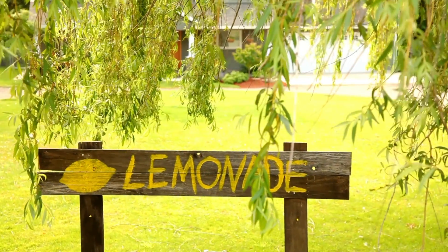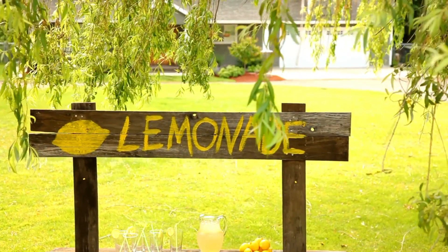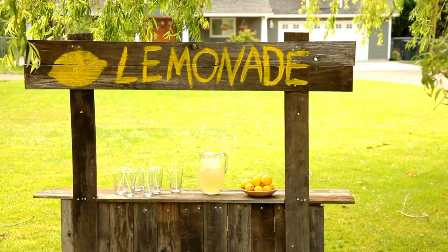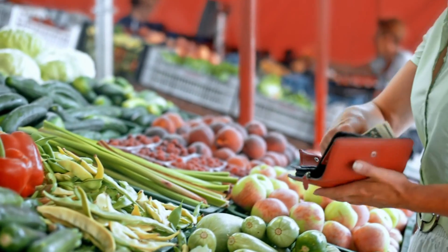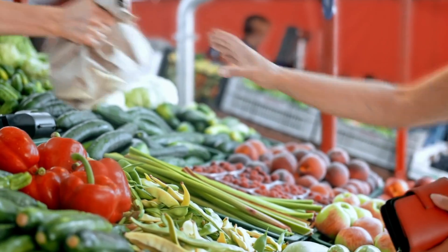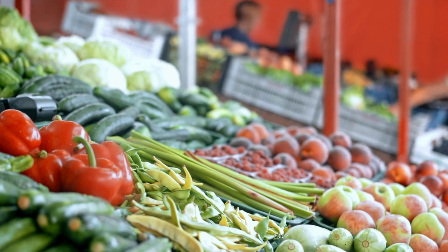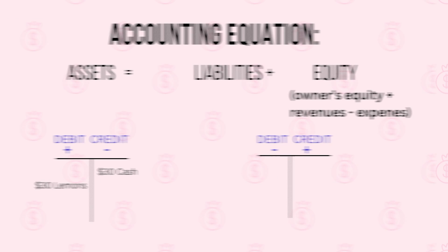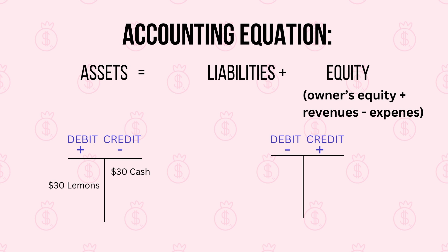Let's look at some examples to see this double entry system in action. Imagine you're running your own lemonade stand — you have your lemons, your sugar, and your trusty cash register. Every time you make a transaction, whether it's buying lemons or selling cups of lemonade, there are two sides: something is given and something is received, or vice versa. Let's say you buy lemons from a supplier. You give them $10 and you receive the lemons. One side of the transaction is the cash going out — but what about the other side? That's where the double entry system comes in. The lemons received is the other side that must be recorded.